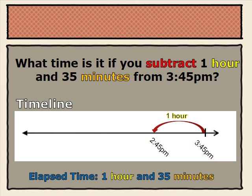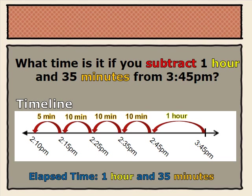Now, we can subtract our minutes. From 2:45 p.m., we subtracted 10, 20, 30, 35 minutes in increments of 10 and 5. So, from 2:45 p.m., we subtract 10 minutes to get to 2:35 p.m., subtract 10 minutes to get to 2:25 p.m., subtract 10 minutes to get to 2:15 p.m., and subtract 5 minutes to leave us at 2:10 p.m., giving us a start time of 2:10 p.m.